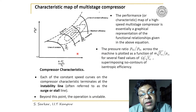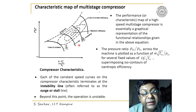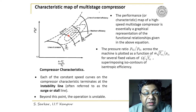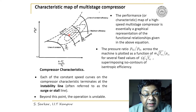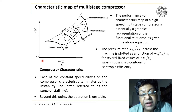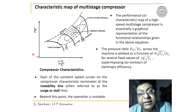For a certain speed, if we throttle the machine, pressure will rise and efficiency will increase. Near the surge line, efficiency reaches a maximum; further throttling causes pressure to increase, blade rows begin stalling, and the machine surges. One should never operate beyond the surge line, as the operation becomes unstable.